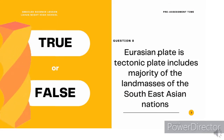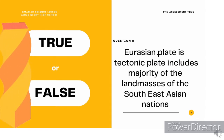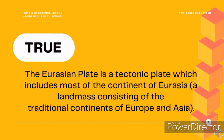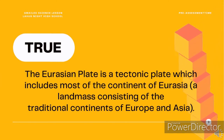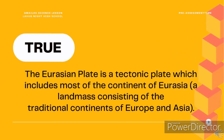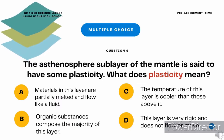True or false? Question 8. The Eurasian plate is a tectonic plate that includes the majority of the land masses of Southeast Asian nations. True or false? It's true! The Eurasian plate is a tectonic plate which includes most of the continent of Eurasia, a land mass consisting of the traditional continents of Europe and Asia.